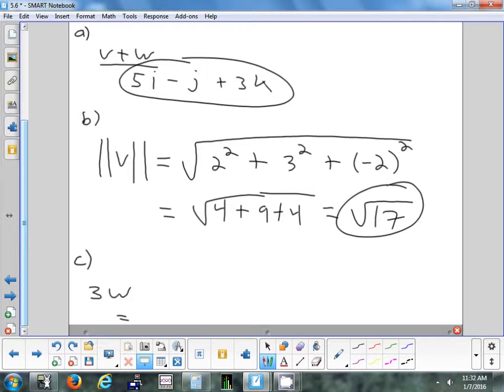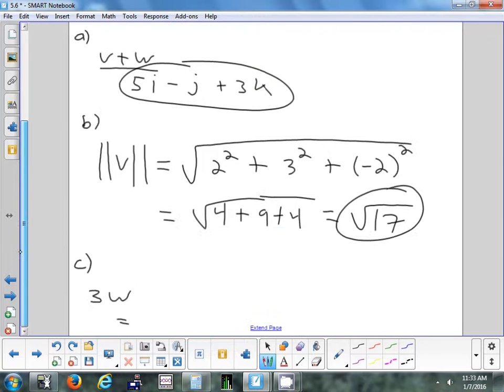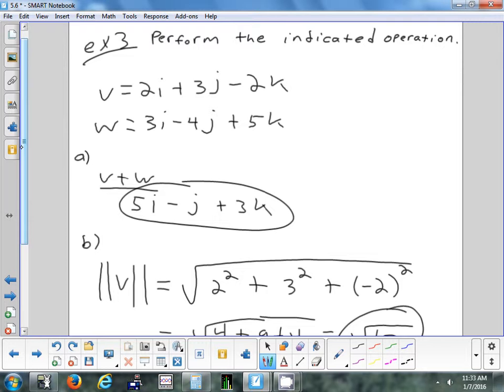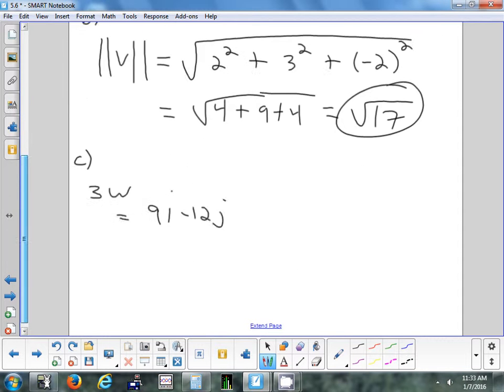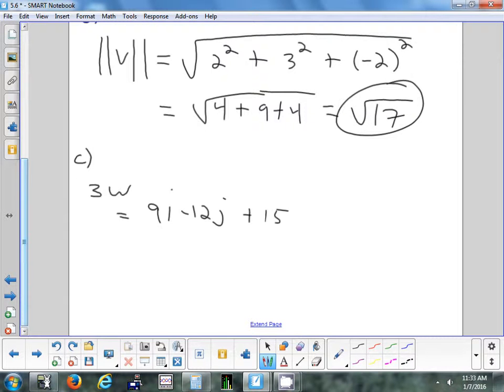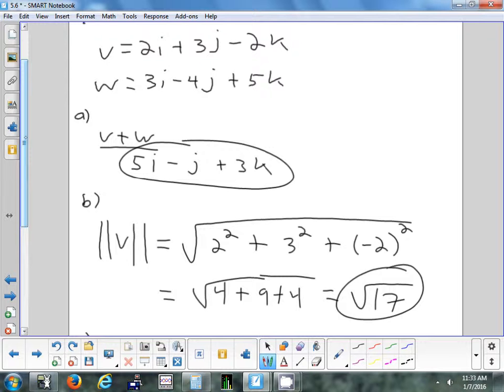Any questions on that? And the last one, this is scaling the vector. John, when you put a 3 in front of a vector, if I were to draw it, how would 3w compare to w? So it would be 3 times as long with the direction change? No. So this vector points exactly the same way. It's just triple the length. All right. So just take each component and triple it. 9i. Minus 12j. Plus 15k. Questions on how I found 3w? So all I did was distribute a 3 to each number there.